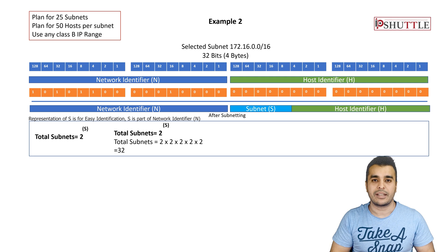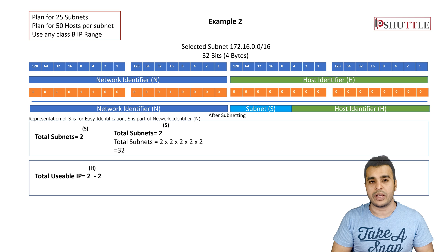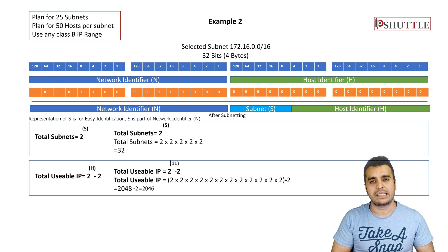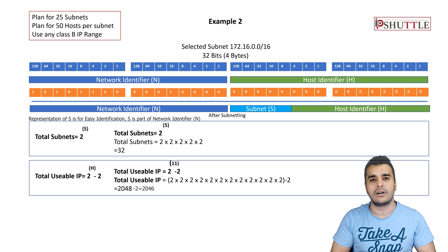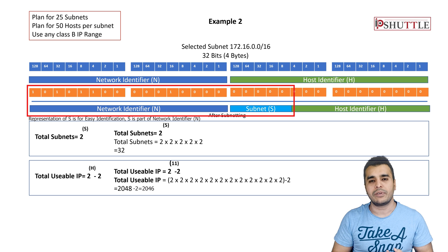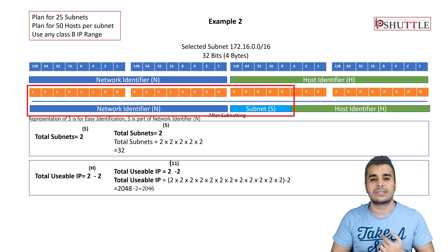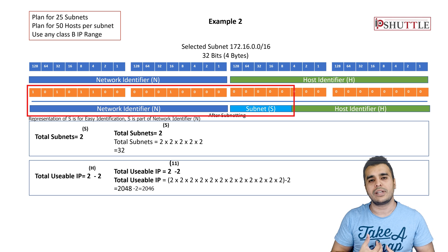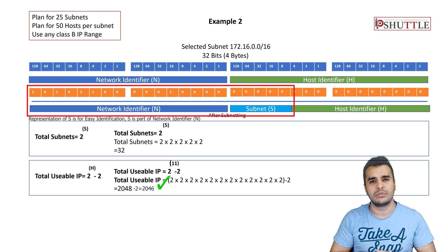Using 2^H minus 2: since we acquired 5 bits from the host identifier for network identification, the remaining host bits are 32 minus 21 equals 11 bits. The 21 comes from 8 (first octet) plus 8 (second octet) plus 5 (borrowed bits in third octet). So 2^11 minus 2 gives approximately 2046 usable IP addresses, which easily satisfies the 50 hosts per subnet requirement.